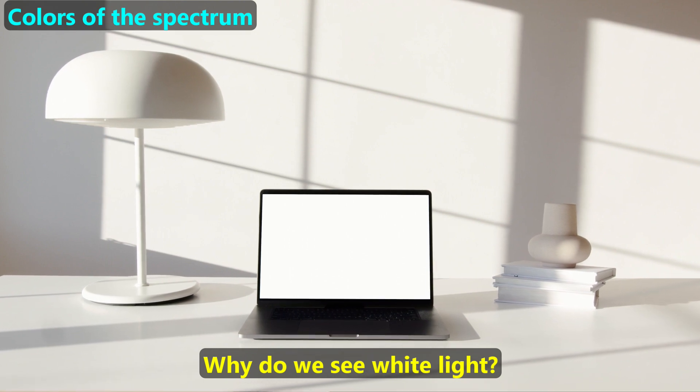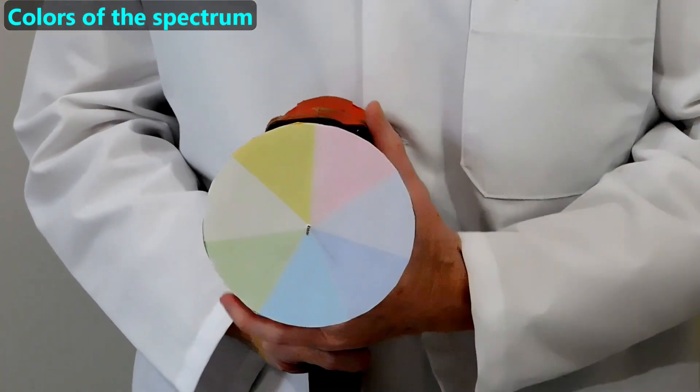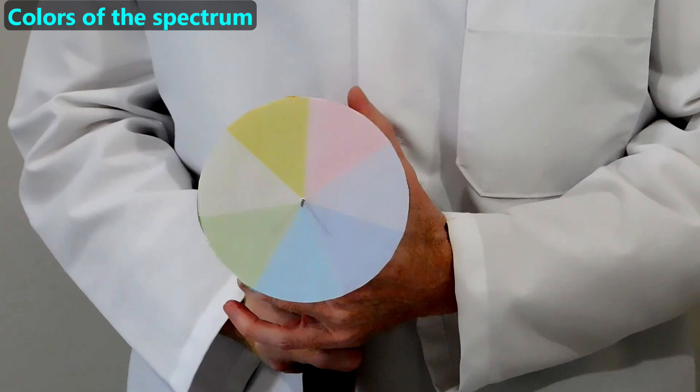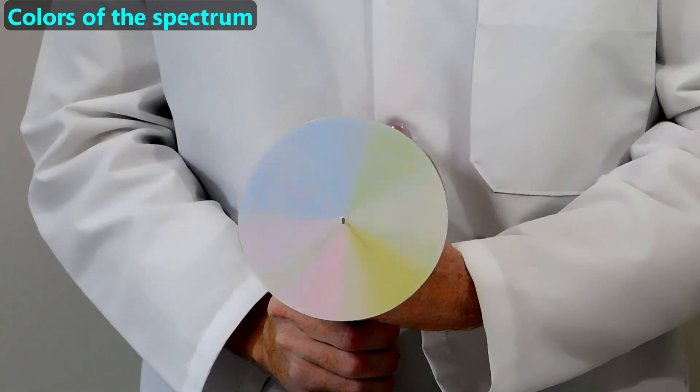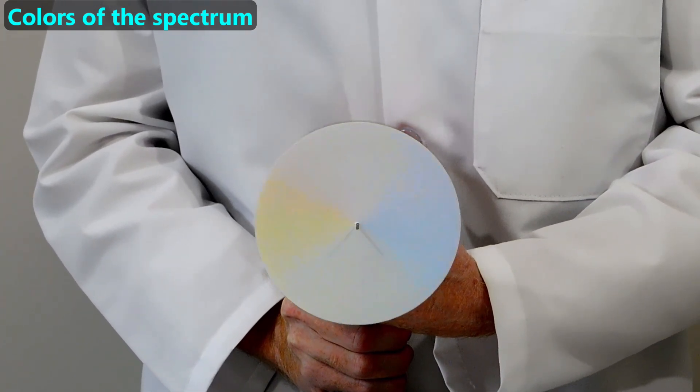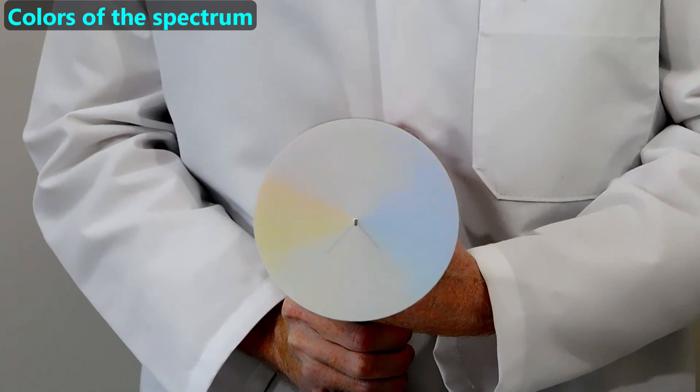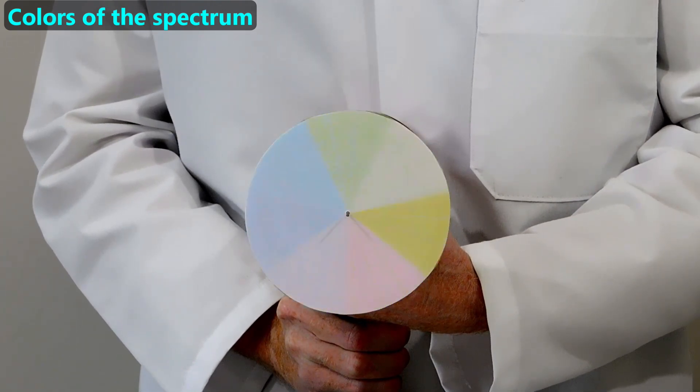To answer that question, let's do a few experiments. We printed this disk with seven different colored wedges, but there is no white on the disk. When we spin this fast, our brains and cameras perceive the collection of multiple colors in one place as a white color. Our perception is wrong because our cameras and brains are unable to keep the colors distinct when they're all in the same place at the same time.